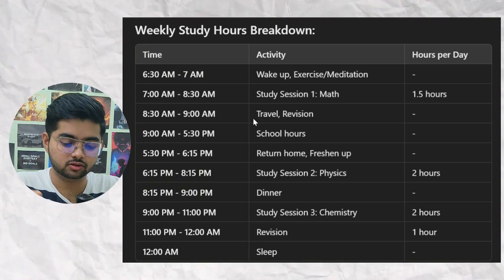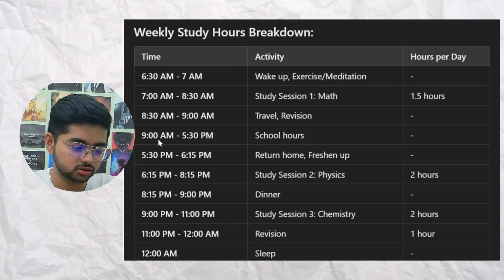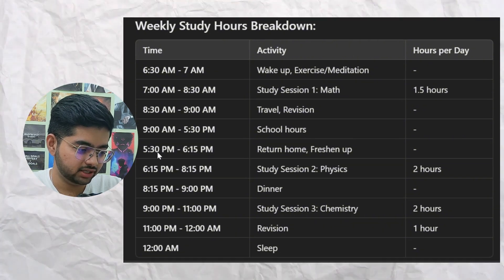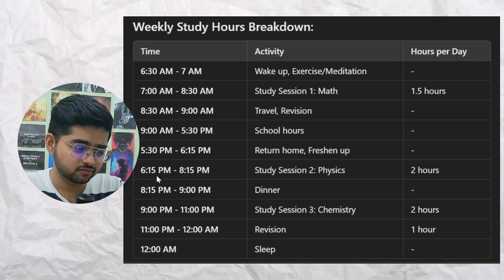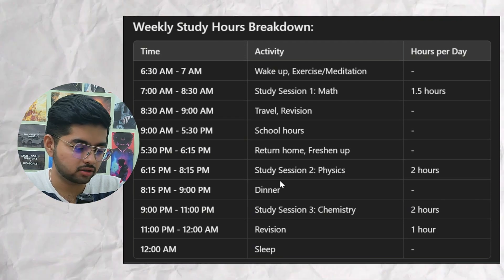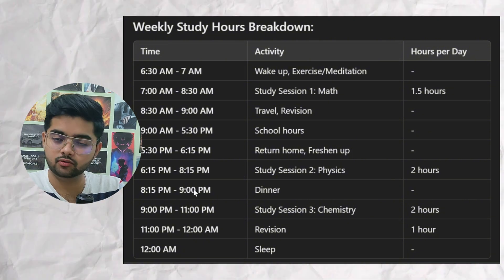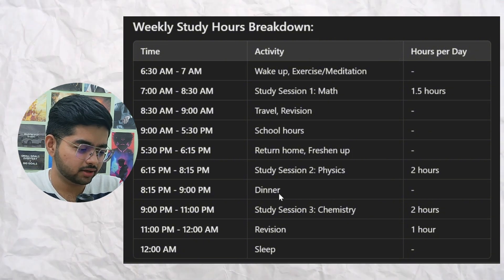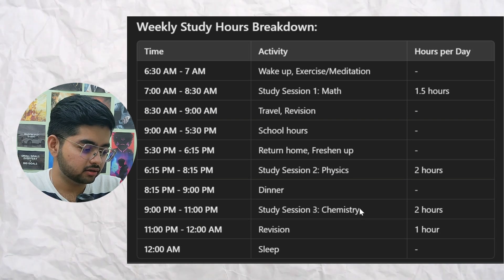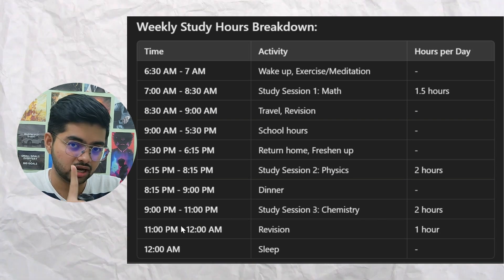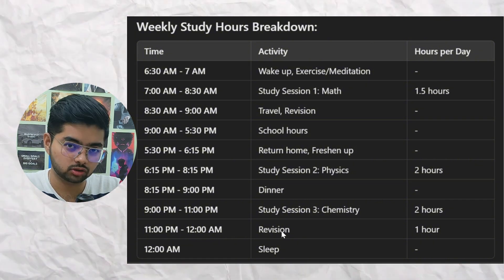If you are sitting in a bus, you can open your mobile or revise shortcut formulas. From 9 to 5:30 will be your school hours. From 5:30 to 6:15 you will be returning home, freshening up, and having a tea break. Then 6:15 to 8:15 — two hours — you will study physics. From 8:15 to 9 is dinner, and from 9 to 11 is study session three — chemistry — for two hours.